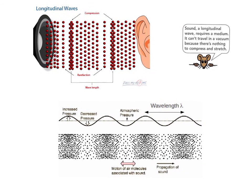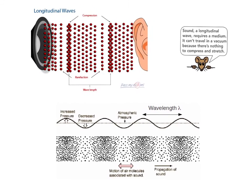One common example of a longitudinal wave that you experience every day is sound. Sound waves are longitudinal waves. Whatever vibrates to create the source of the wave pushes air molecules together. That energy is transferred to other air molecules, and there are areas of compression and areas where there's not compression. The areas where molecules come together are called compressions, and the areas where they're spread apart are called rarefactions.